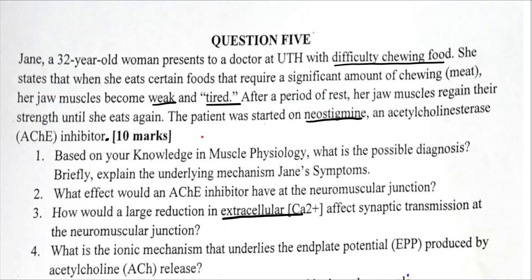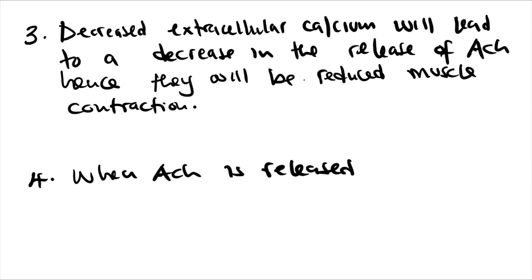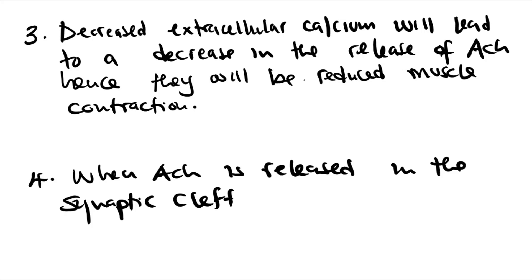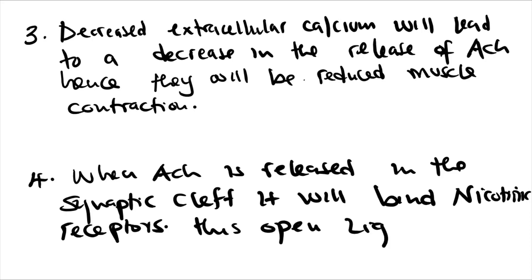Number four: what is the ionic mechanism that underlies the end plate potential produced by acetylcholine? When acetylcholine is released in the synaptic cleft, it binds to nicotinic receptors. After it binds nicotinic receptors, this opens ligand-gated sodium channels.